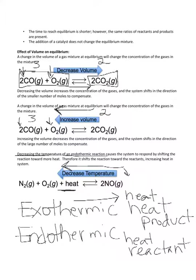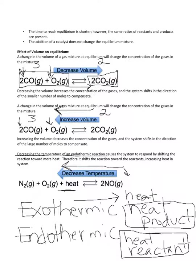Volume is easy — it always shifts towards the side of more or fewer moles, so all you have to do is count the number of moles. Temperature takes a little more thinking. This concludes chapter 10. Thank you so much for listening and I hope to see you back for chapter 11.